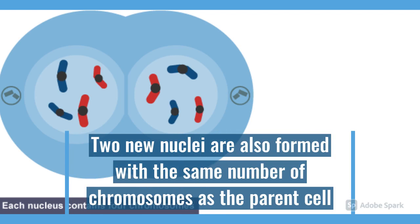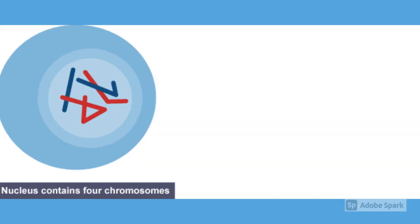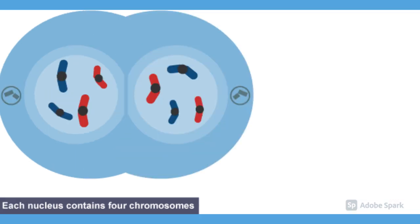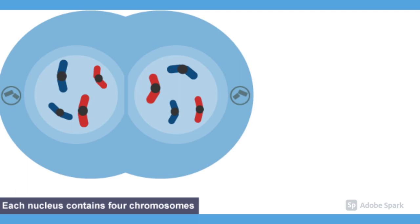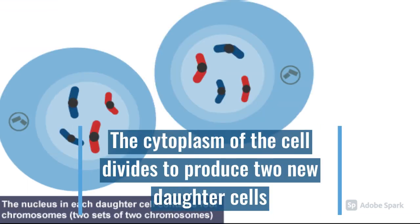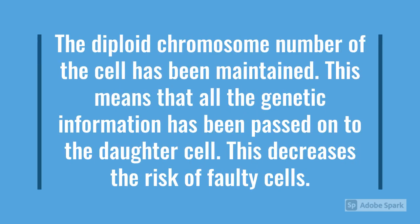These nuclei now have the same number of chromosomes as the parent cell. If the chromosomes hadn't replicated, we would have ended up with half the number of chromosomes in each cell. So if you look at the parent cell shown before, you will see that it has four chromosomes, just like the new ones. Finally, the cytoplasm of the cell divides to produce two new daughter cells. The diploid chromosome number has been maintained — in this case, four. With the number maintained, it means that all the genetic information has been inherited by the daughter cells. The daughter cells now have all the genes to work properly.